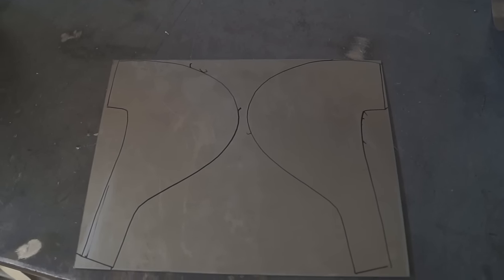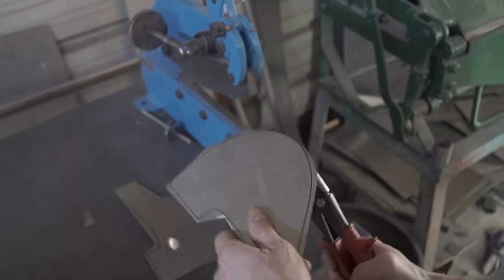These pieces will make up the cheek section of the helmet. I used a hammer and the English wheel to shape them.